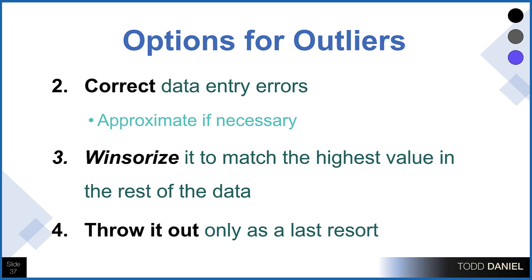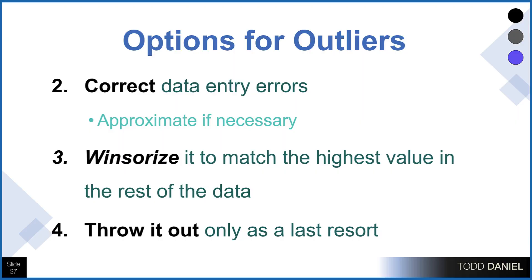A third option is to Windsorize — take the outlier score and recode it as the next highest reasonable value that would match the rest of the data set. I did this with the outlier of 20: when I looked at the next lower score, which was an 8, I changed that 20 score to a 9. It's still the highest score in the data set, but now the outlier is much closer to the rest of the data points. The last option for dealing with outliers is to throw out the outlier. However, I recommend doing this only as a last resort. If you can possibly find a way to keep this outlier in your data set and make it usable, I would encourage you to do that.